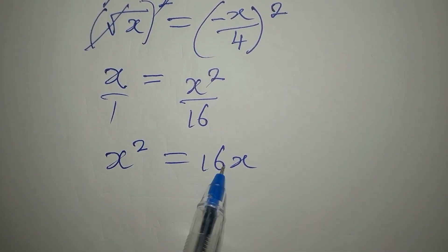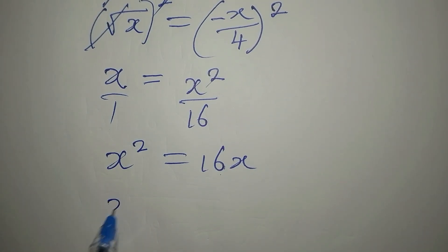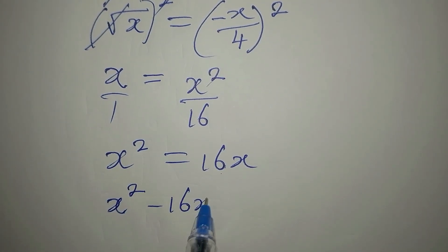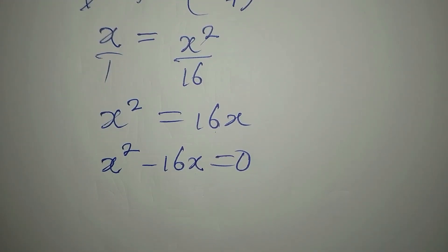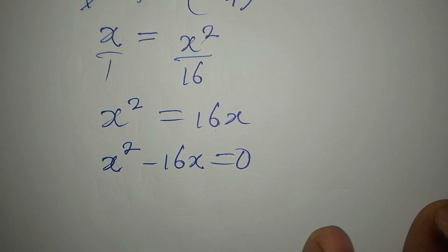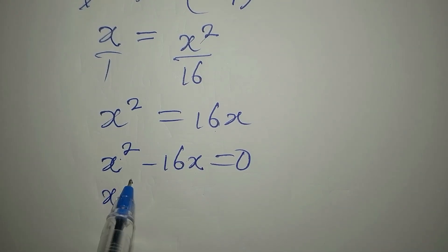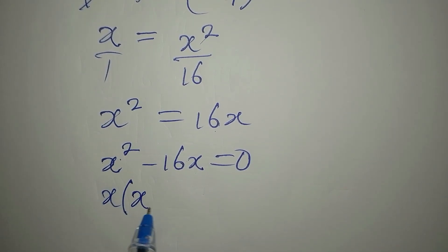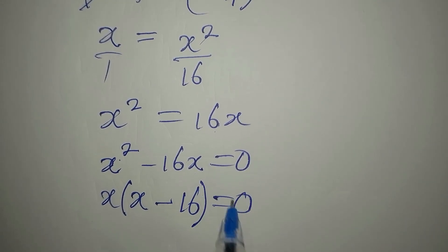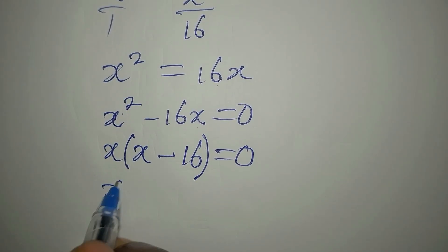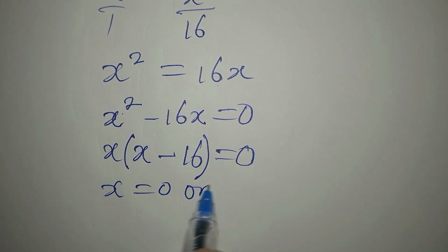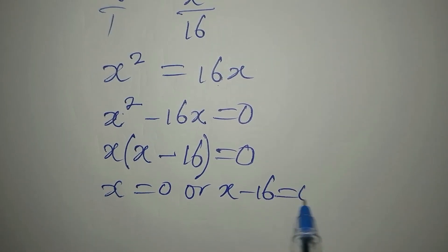Do not divide by x. Bring 16x to the left: x squared minus 16x equals zero. This is a quadratic equation with two solutions. Factoring out x: x times (x minus 16) equals zero.